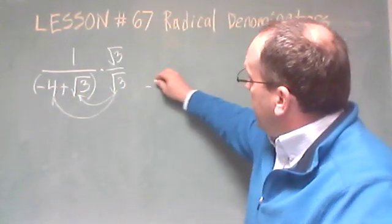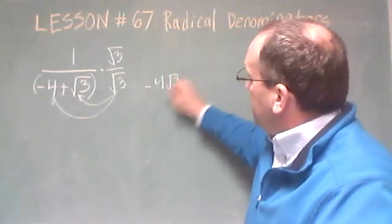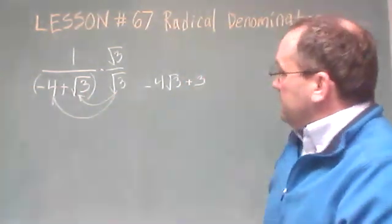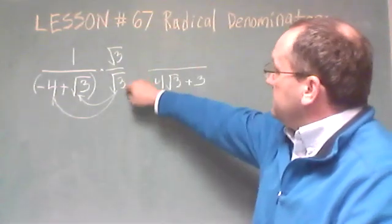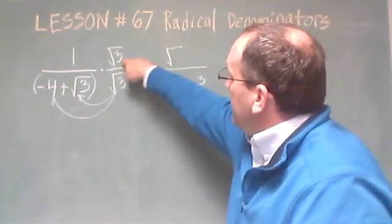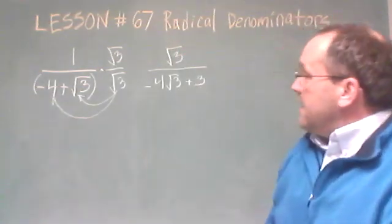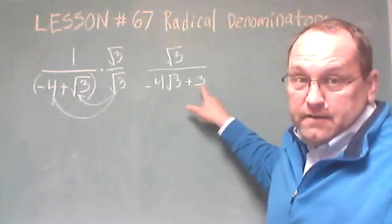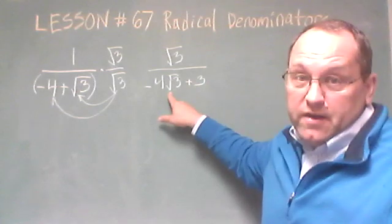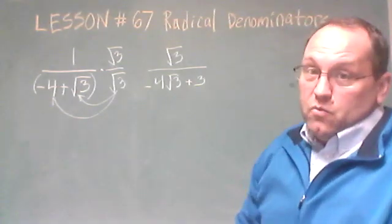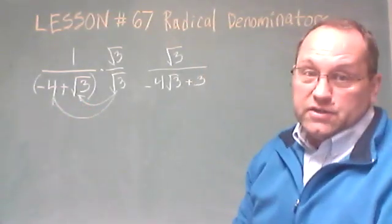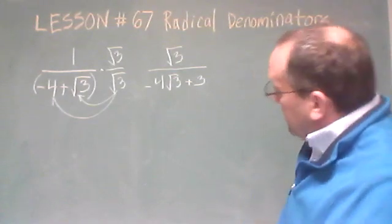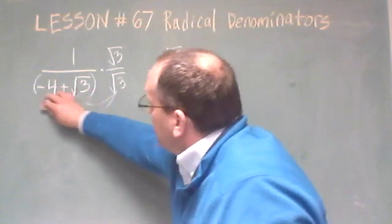In the denominator, we would get a minus 4 times the square root of 3, plus a square root of 3 times square root of 3, which will be 3. That would be our new denominator, and our new numerator would be square root of 3 times 1. As we see, we've gotten rid of the square root symbol in the second term, but we've just simply moved another square root over here. So doing that method, when it involves a sum or addition — two terms added or subtracted in the denominator — that method does not help us get rid of the radical symbol.